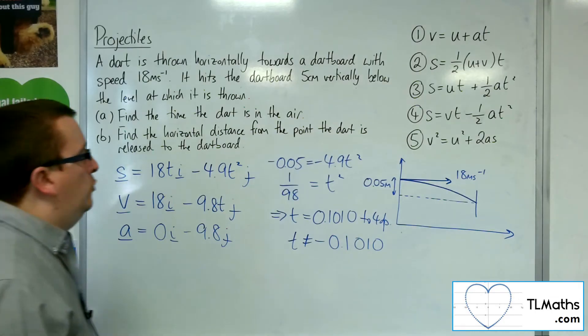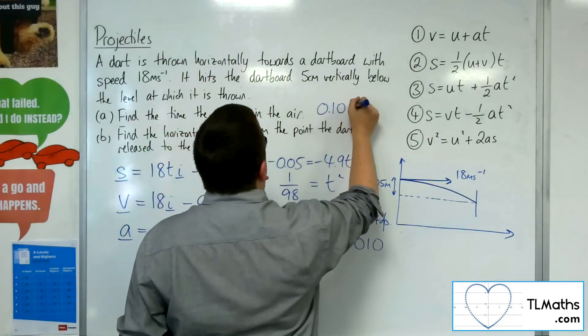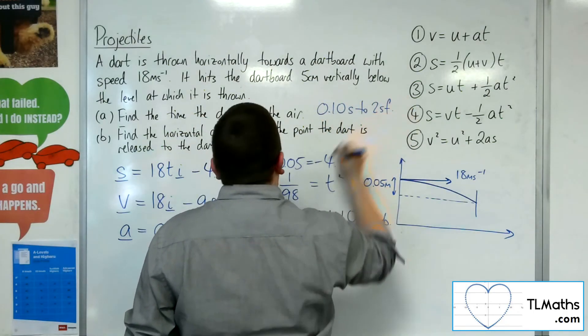So to four decimal places, it would be 0.1010 seconds. To two significant figures, 0.10. So 0.10 seconds to two sig figs.